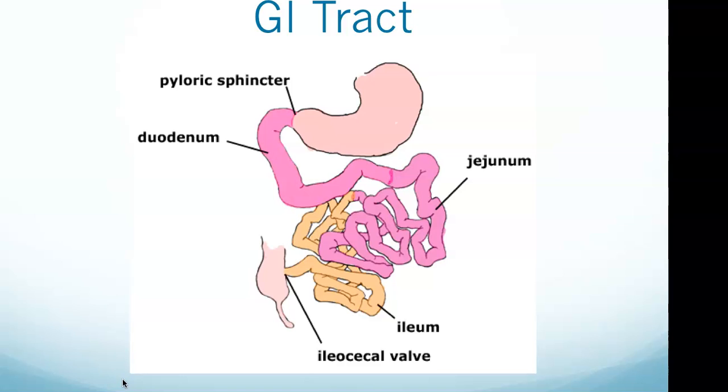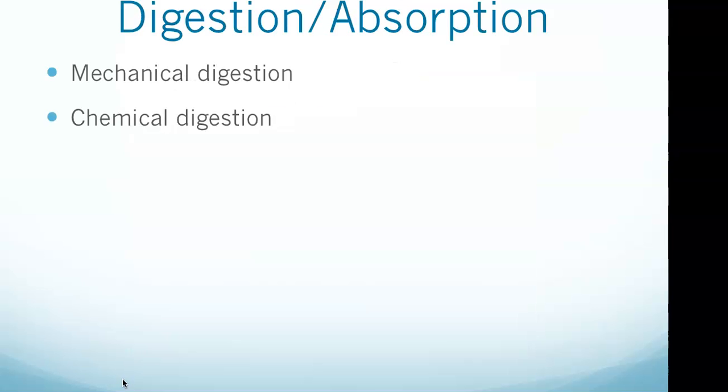Let's get into more detail on digestion and absorption. Mechanical digestion involves the physical breakdown of food into smaller pieces. Chewing, the churning process of the stomach, and the muscular action of peristalsis physically mash food particles apart, creating a greater surface area for chemical digestion. Chemical digestion involves enzymes or acids that break down food at the molecular level. Digestive enzymes are secreted by certain exocrine organs such as the pancreas or liver, and by specialized cells in the lining of the stomach and intestines. Enzymes are released in the inactive zymogen form and are rendered active only in the presence of other digestive compounds, such as hydrochloric acid.